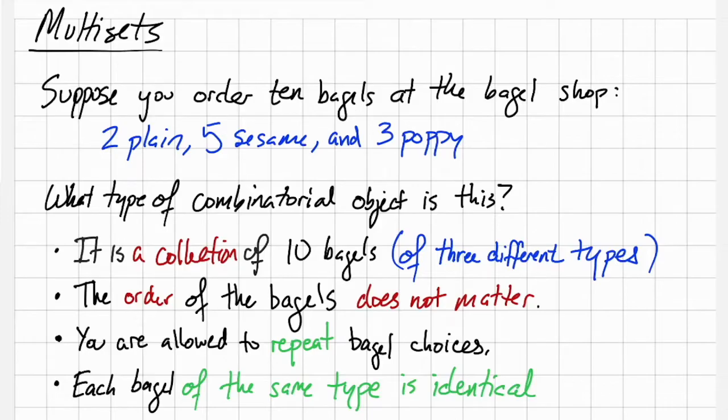Suppose you head over to the bagel shop and you order 10 bagels: 2 plain bagels, 5 sesame bagels, and 3 poppy seed bagels. What type of combinatorial object is this collection of bagels?